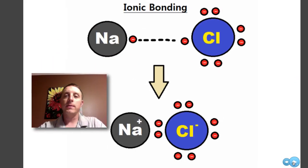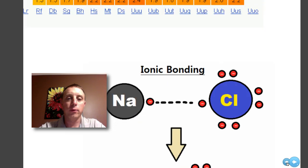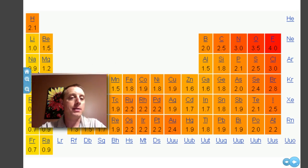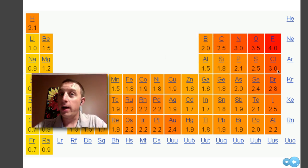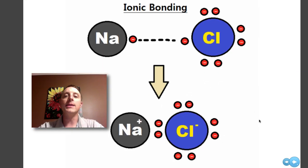If you have two elements that have very different electronegativity—let's say sodium and chlorine, for example—sodium is 0.9, relatively low electronegativity. Chlorine over here is 3.0, relatively high. So we have a very large difference in electronegativities. Chlorine is going to be pulling very hard on its electrons. Sodium, not so much.